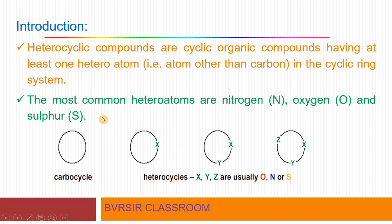The most common heteroatoms are nitrogen, oxygen, and sulfur. This one is a carbocyclic compound, whereas these examples constitute heterocyclic compounds. In the heterocyclic ring system, atoms other than carbon are present — nitrogen, oxygen, or sulfur.